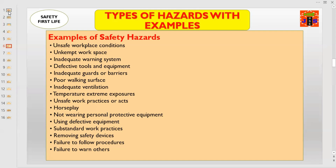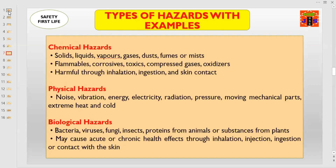You can easily remember a few examples, and once you are in an interview or attempting a paper, you can give examples of safety hazards. The second type of hazards are chemical hazards. Chemical hazards might be in the form of solids, liquids, vapors, gases, dust, fumes, or mists. Chemicals might be in the shape of flammables, corrosives, toxics, compressed gases, or oxidizers. Remember, chemicals are harmful and enter the body through inhalation, ingestion, or skin contact.